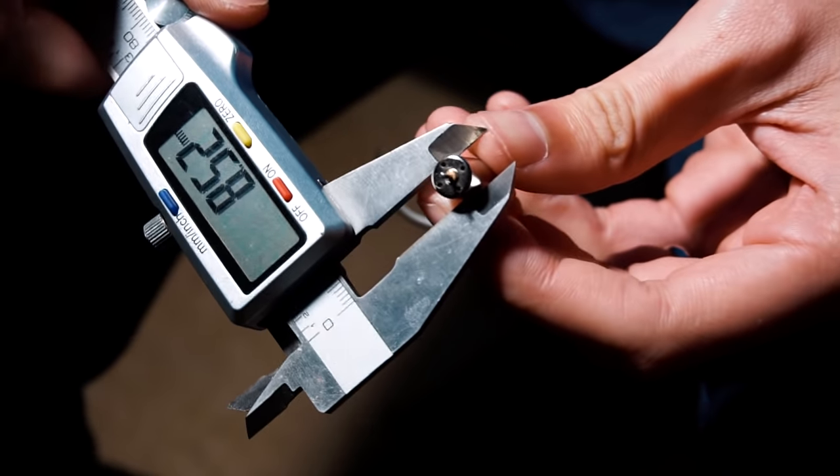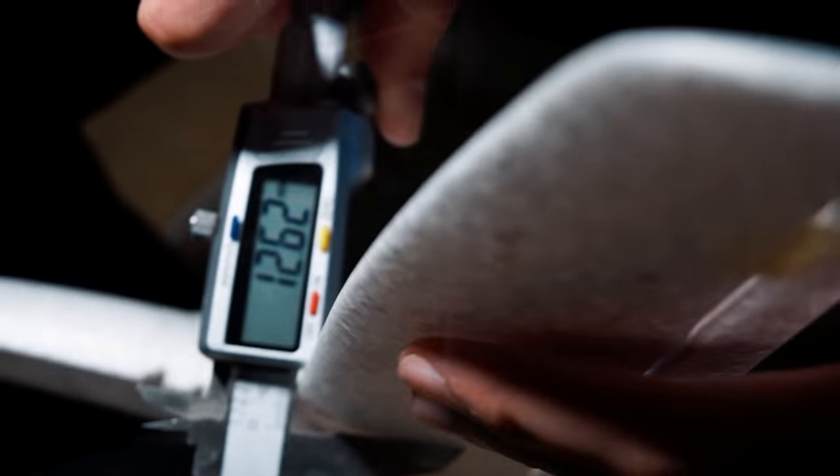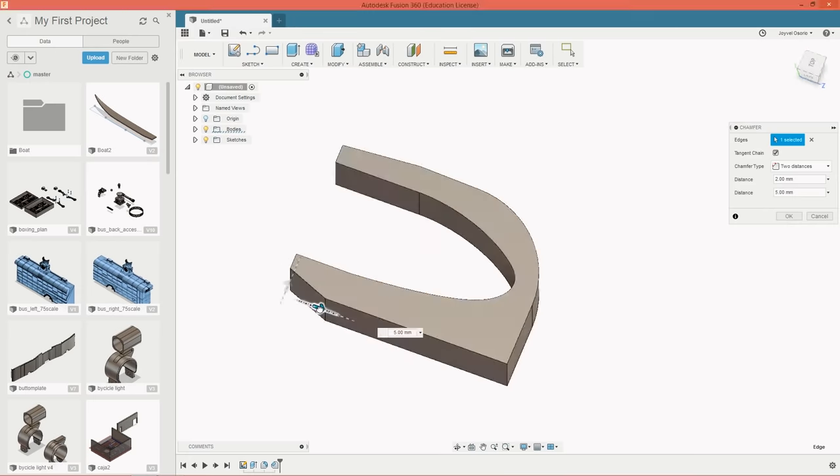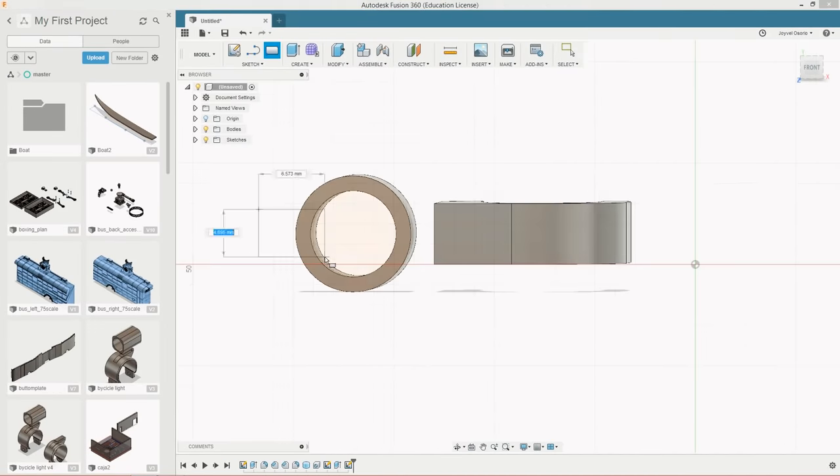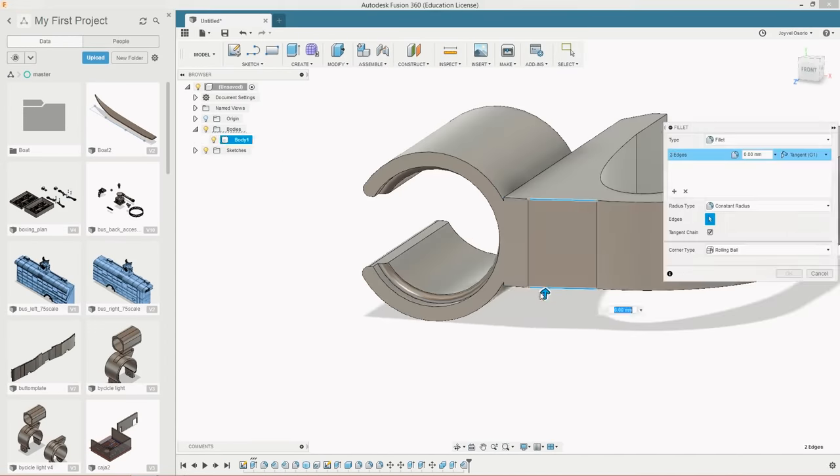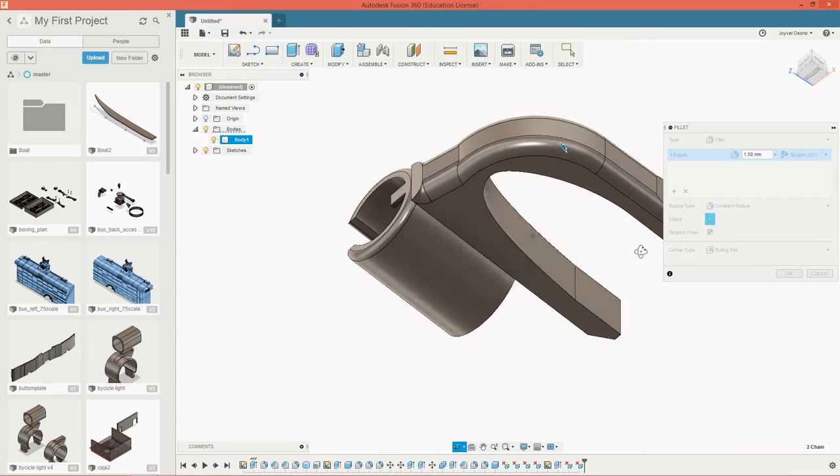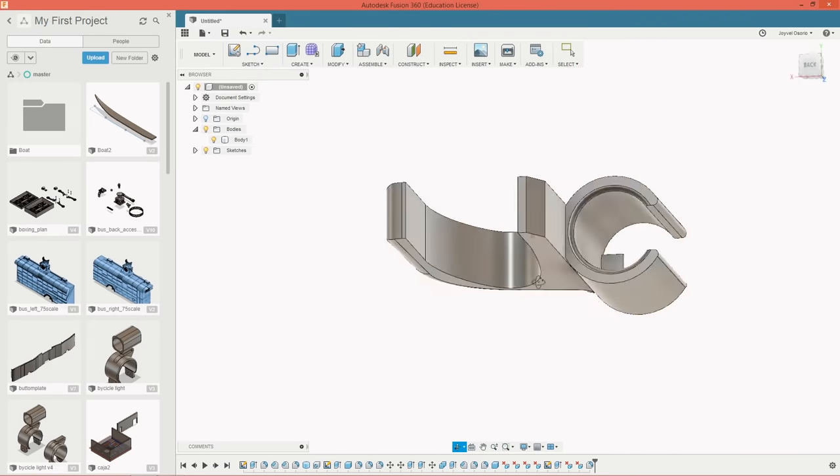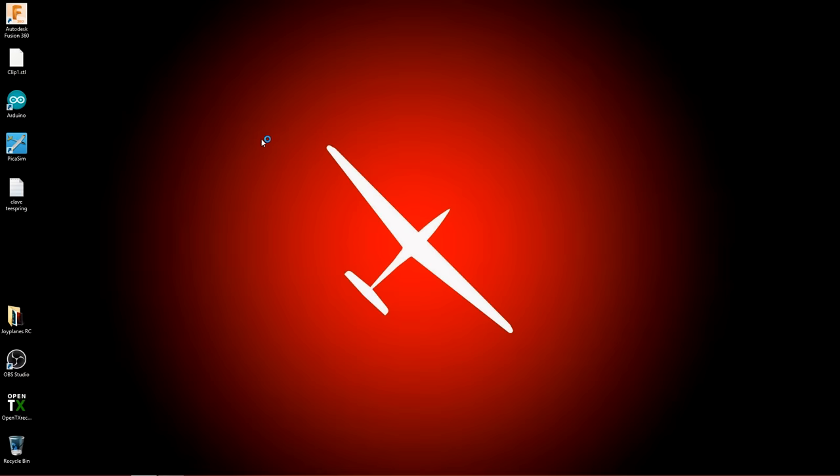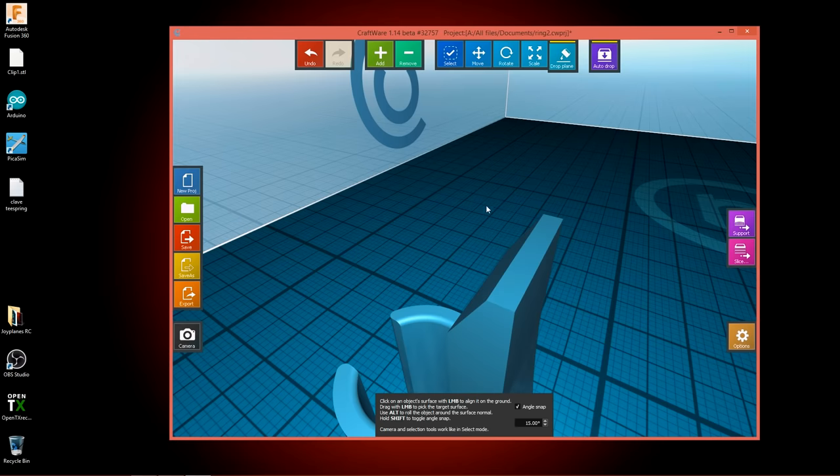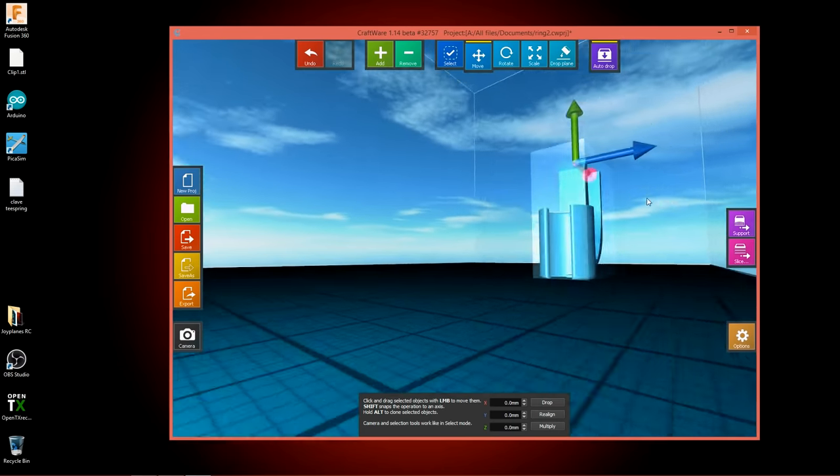And after taking a few measurements I go to the software Fusion 360. This software is used to design 3D objects. I'm designing a base for the motors. After exporting the object in STL format I import this file into another software called Craftware. This software will prepare the file to be 3D printed.